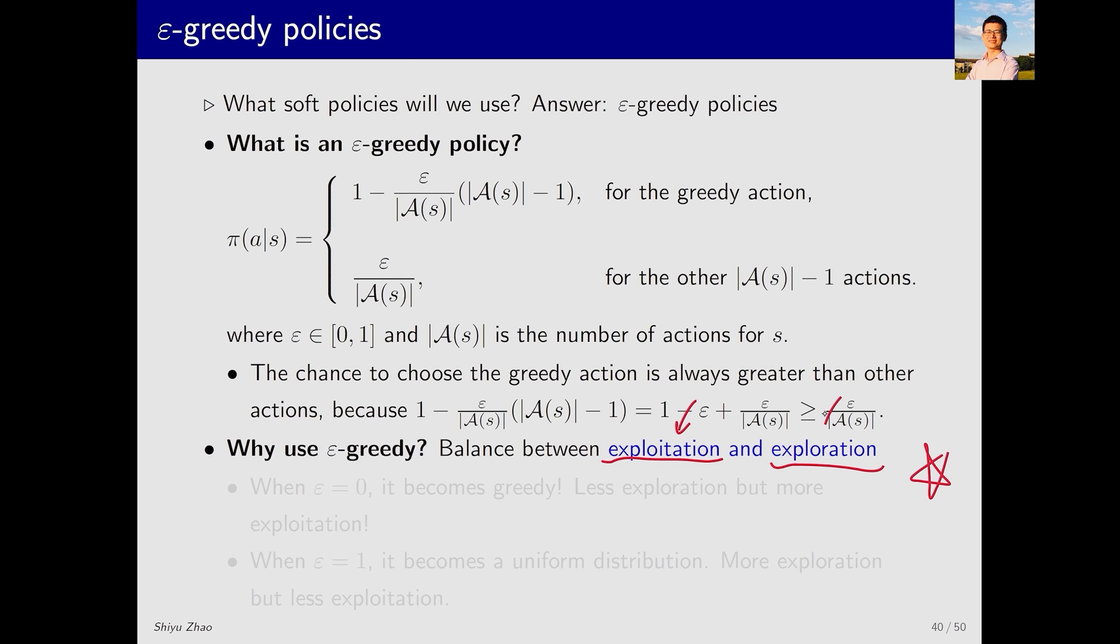On the other hand, exploration refers to the process of trying other actions even when our current knowledge suggests that a particular action may yield high rewards. It is based on the assumption that the current knowledge may be incomplete, and by exploring other actions we may discover other actions that have even higher action values.